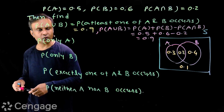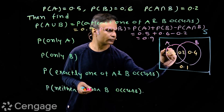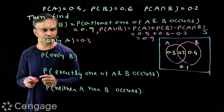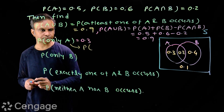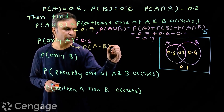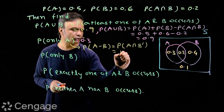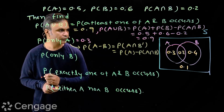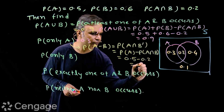Now we find the probability of only A — that is the region of set A excluding A intersection B — and this value is 0.3. In set theory, only A means A minus B, which equals P(A ∩ B complement) = P(A) − P(A∩B) = 0.5 − 0.2 = 0.3.